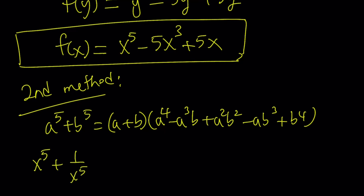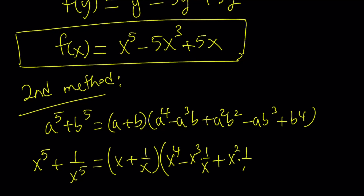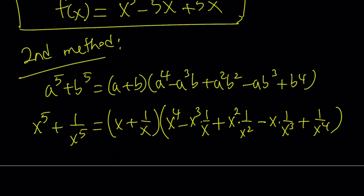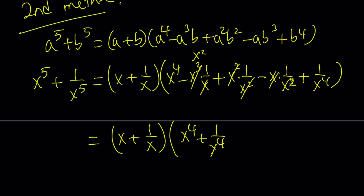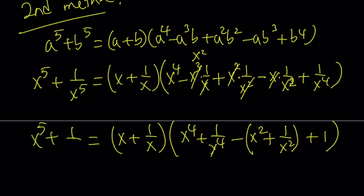Let's apply this to x to the fifth plus 1 over x to the fifth, with a equals x and b equals 1 over x. We get x plus 1 over x from the first factor. From the second factor, we get x to the fourth minus x cubed times 1 over x plus x squared times 1 over x squared minus x times 1 over x cubed plus 1 over x to the fourth. Simplifying, we rearrange to get: x plus 1 over x, times x to the fourth plus 1 over x to the fourth, minus x squared plus 1 over x squared, plus 1.